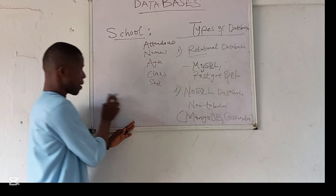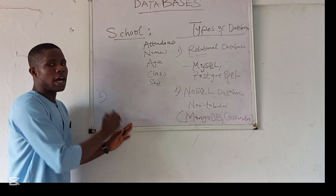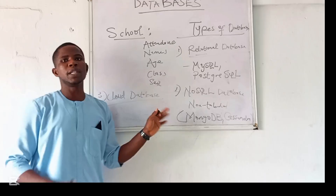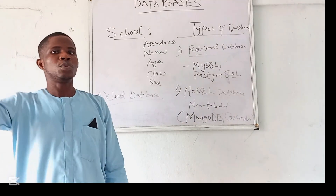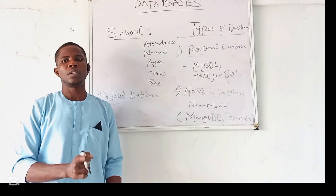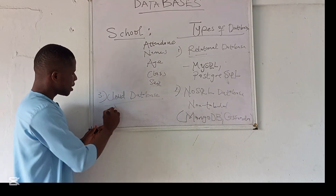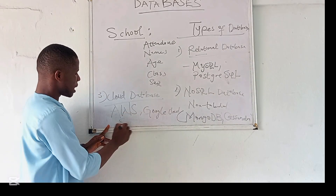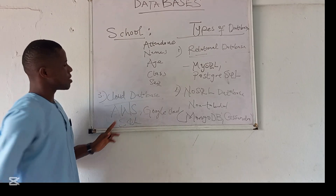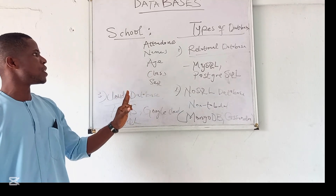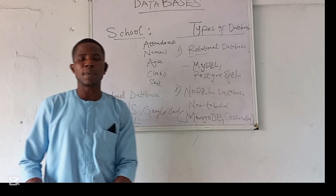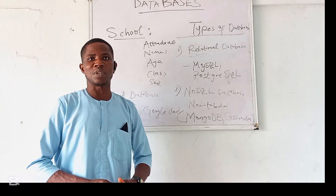For the third type, you have what we call the cloud database, where you are storing data on a remote server. Examples include AWS (Amazon Web Services), Google Cloud, and Google Cloud SQL. These are examples of cloud databases that help you store information. This is just the first part of this video — I will see you in the next one.